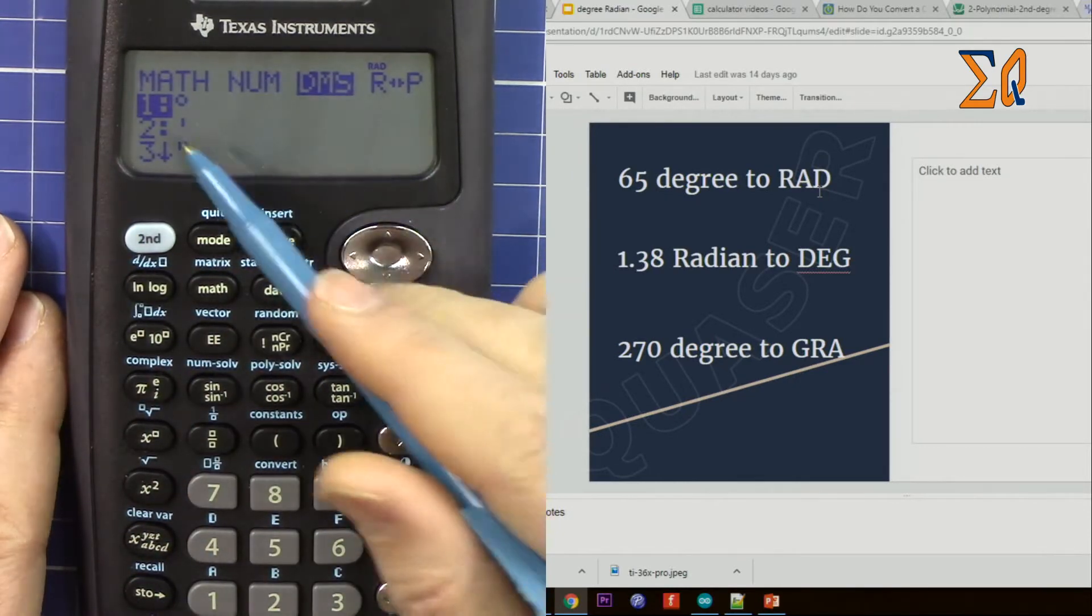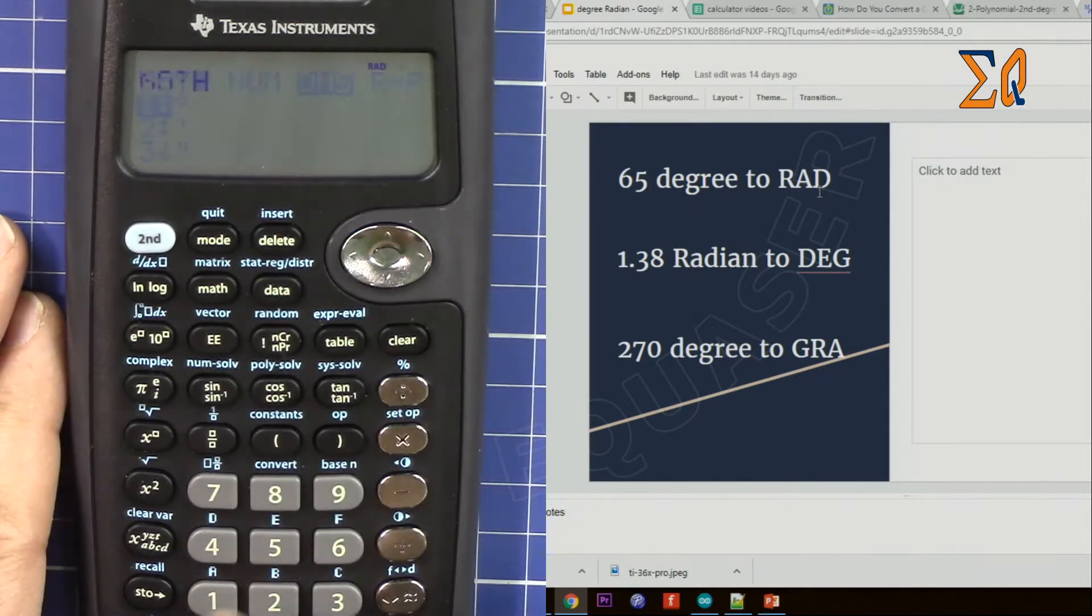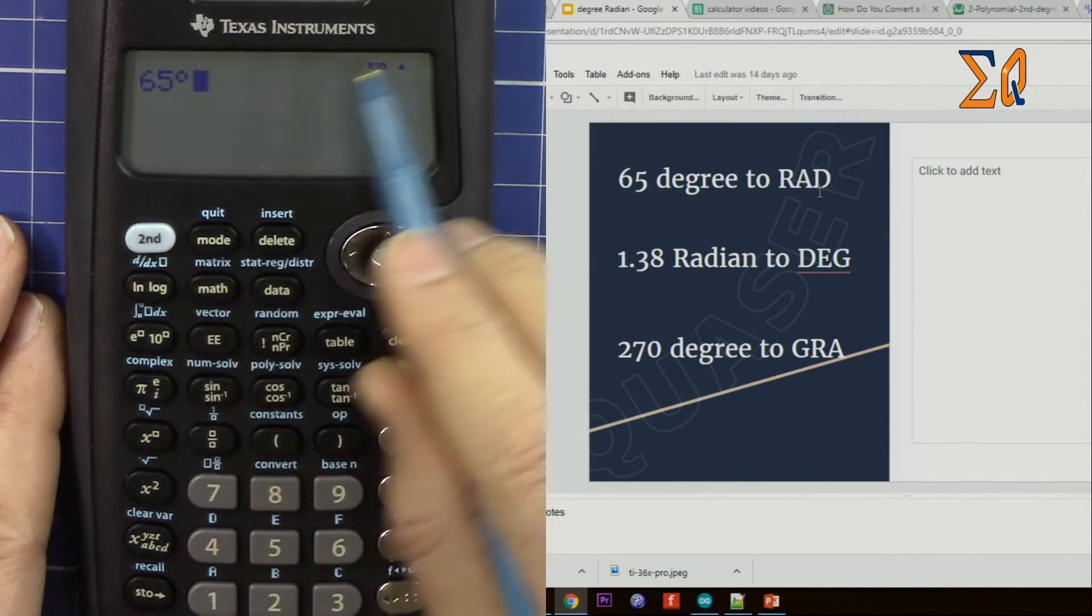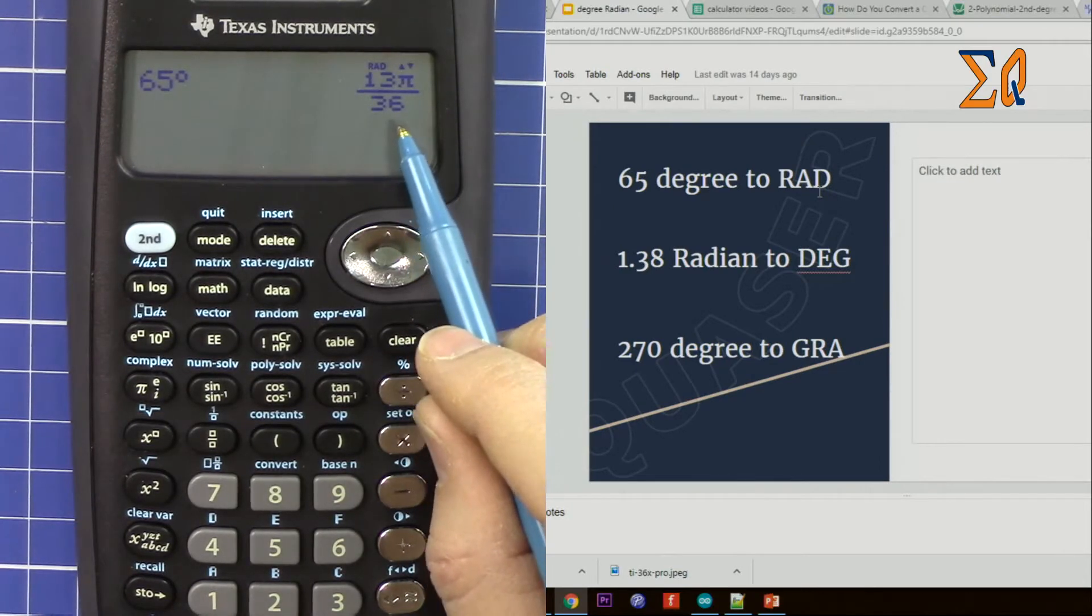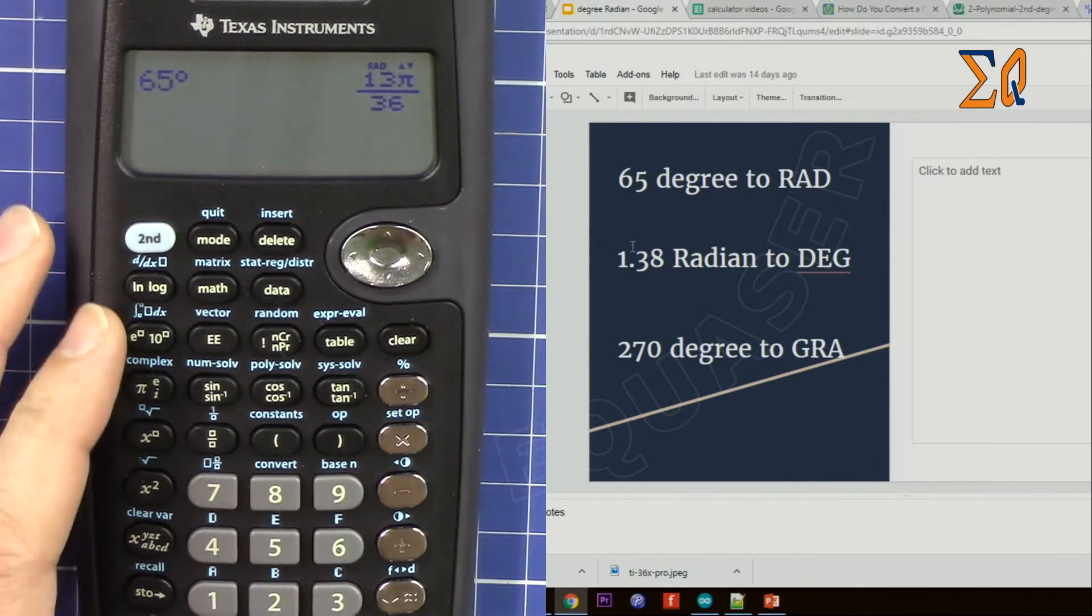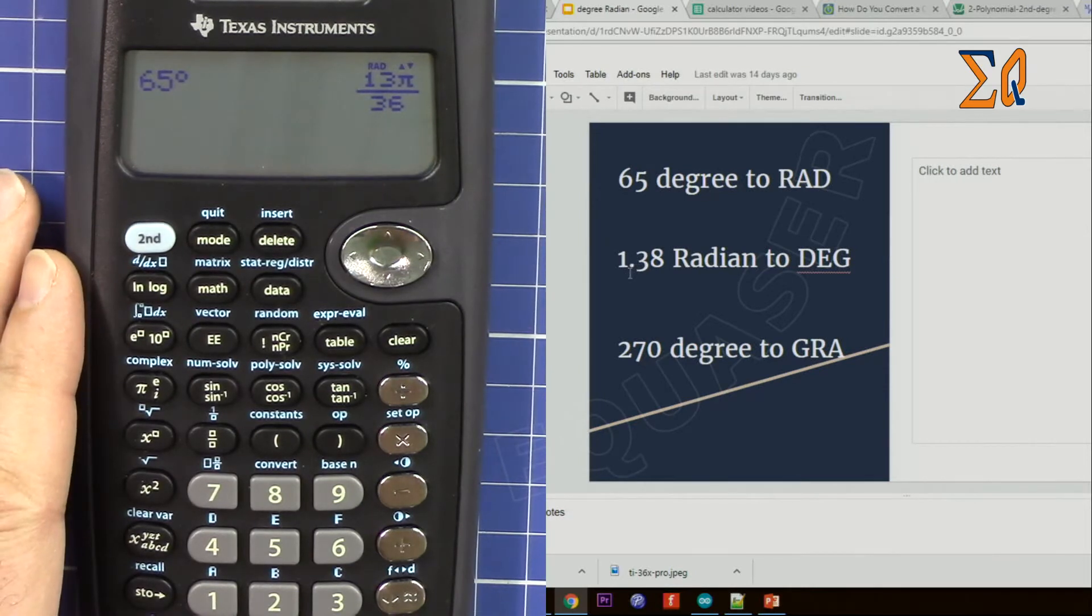If I press enter it will give me in radian: 13π over 36. So that's the value. Now let's look at the second example here.